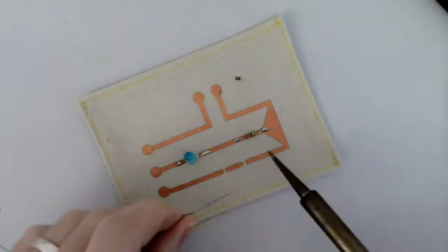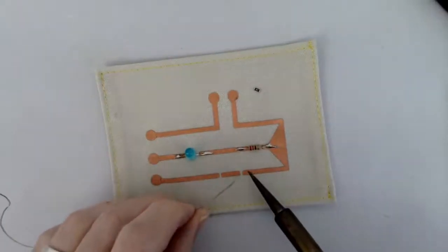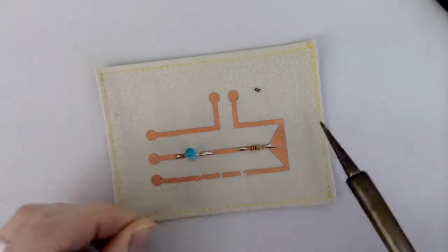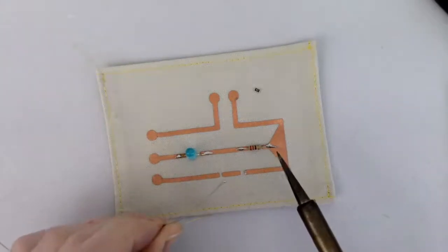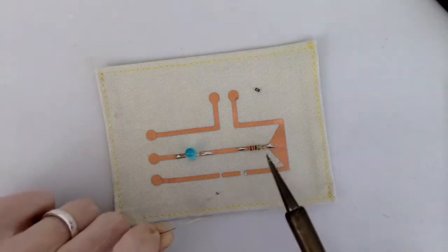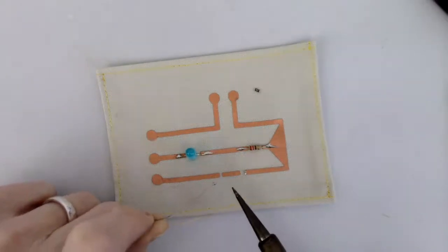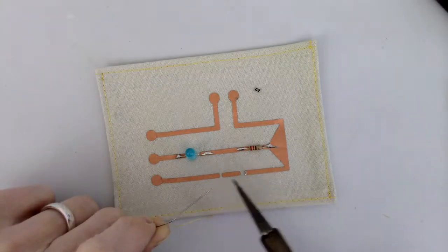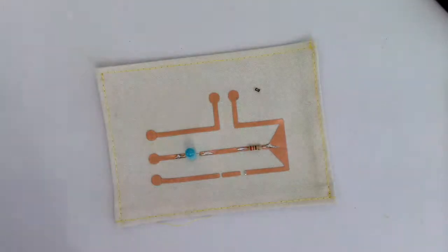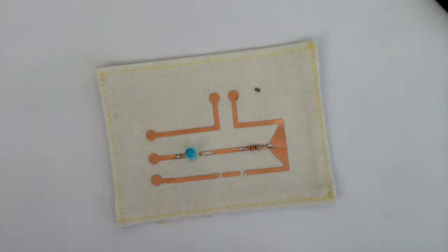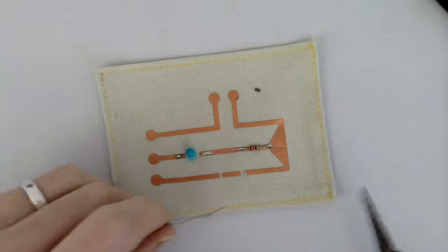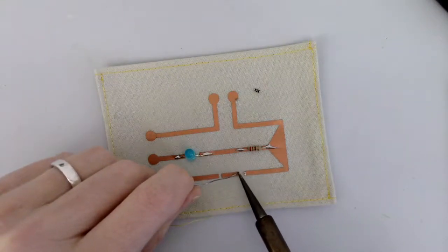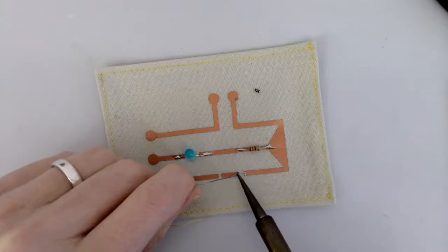And then I'm gonna go ahead and just apply a little tiny bit of solder here. Now you want to be very careful. I'm glad this happened - my soldering iron might actually be a little bit too hot because I just pulled off a piece of my conductive fabric, which is not great. I'm gonna clean my soldering iron and I'm going to decrease my temperature.